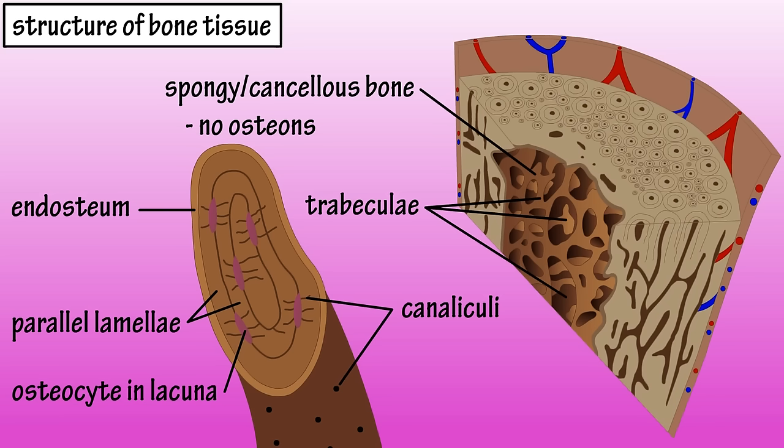Like in compact bone tissue, the canaliculi provide a passageway for nutrients to reach the osteocyte cells. The formation or lattice-like look of spongy bone allows it to distribute any stress or pressure applied to it throughout the entire framework.